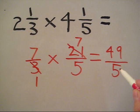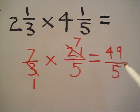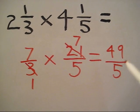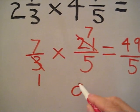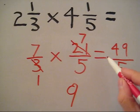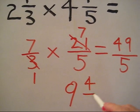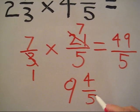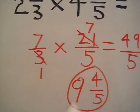We're going to change this or simplify it to make it a mixed number. So we ask ourselves, how many times does 5 go into 49? It goes in 9 times, because 9 times 5 is 45. We've got 4 left over to get to 49. So our final answer is 9 and 4 fifths.